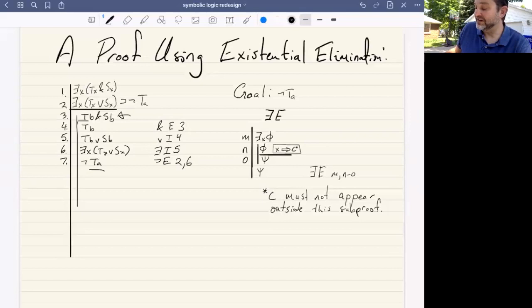And now we've reached a conclusion that does not contain the name which we introduced here. Right. We've ended up with something that does not contain B. And so we can assert, and indeed this thing is our conclusion that we desire. So given the rules of existential elimination, we can assert outside of this subproof that it is not the case that A is T via